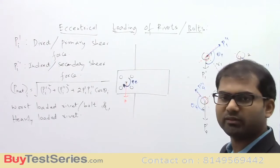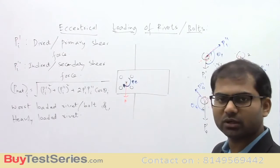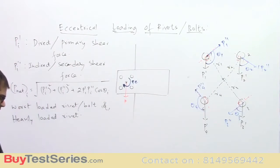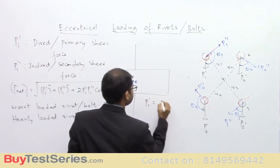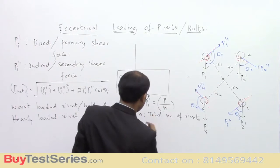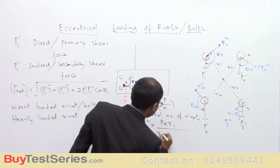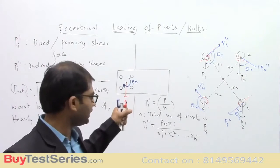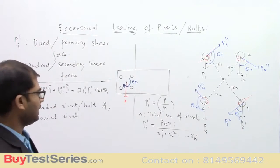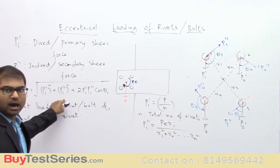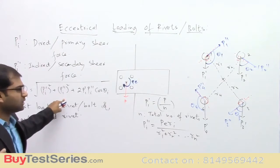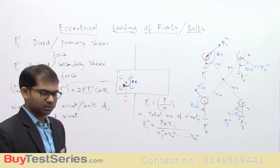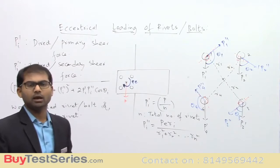The primary force formula is: Pi' = P/n, where n is the total number of rivets. The secondary force formula is: Pi'' = (P·e·ri) / (r1² + r2² + r3² + ... + rn²). You evaluate r1, r2, r3, r4 and substitute to get primary and secondary loads on each rivet. Primary loads are the same for all rivets, but secondary loads depend on ri — the distance from the centroid. The farther a rivet, the higher the probability it becomes the worst loaded rivet. The angle θ also matters: if cosθ is large, that rivet has a higher probability of being heavily loaded.